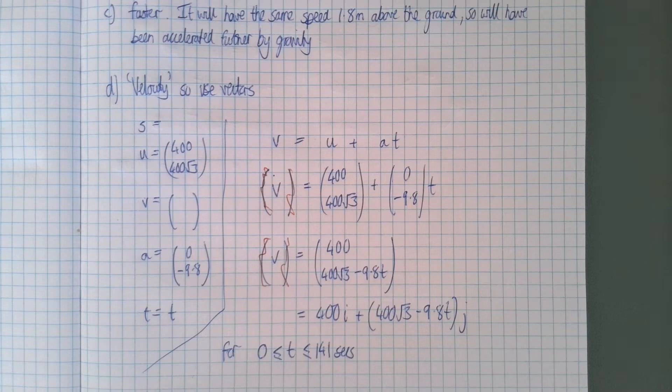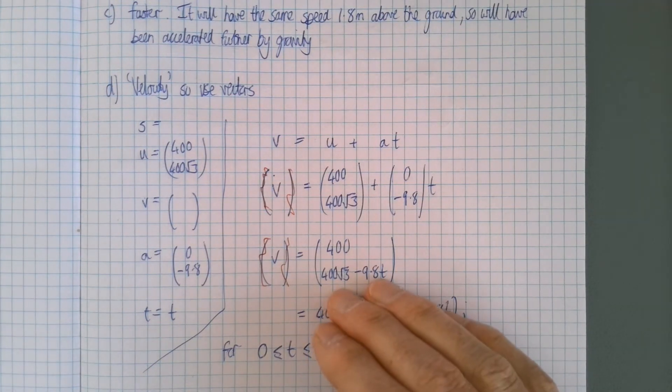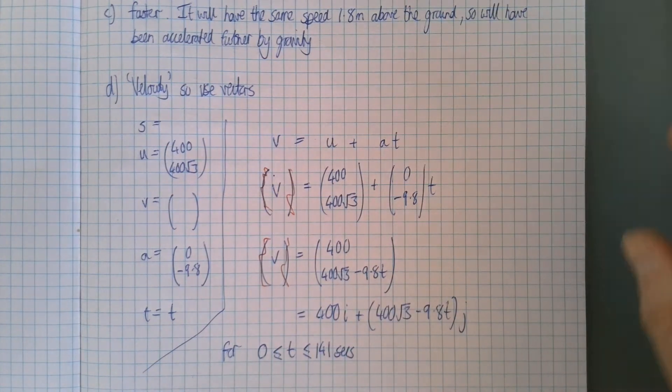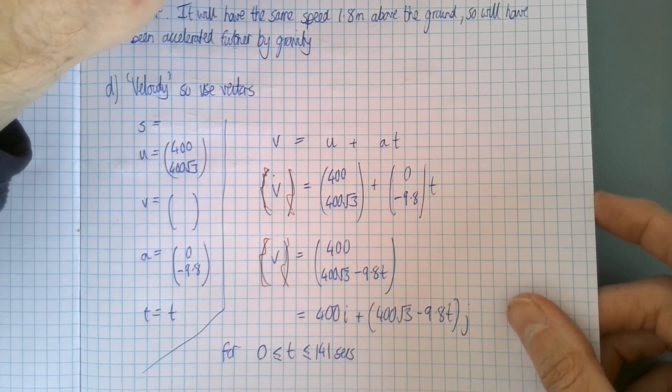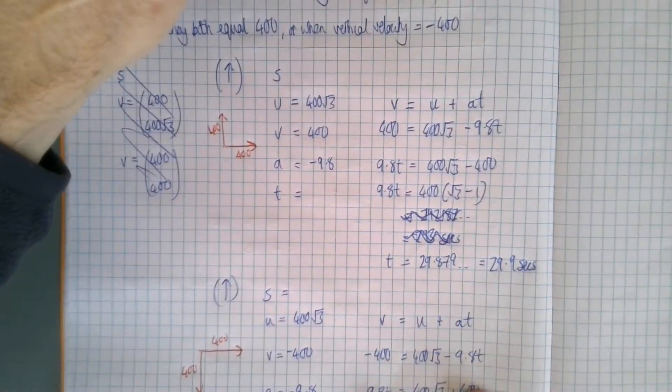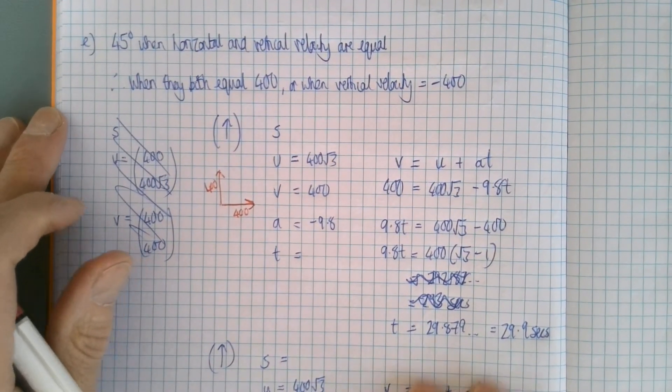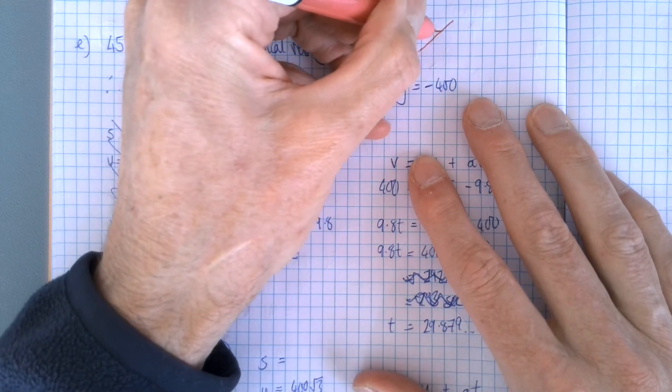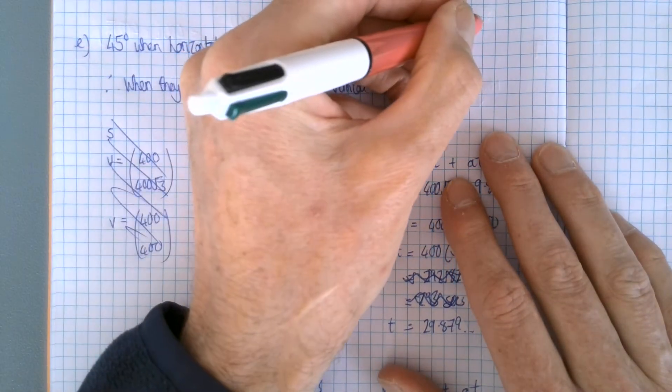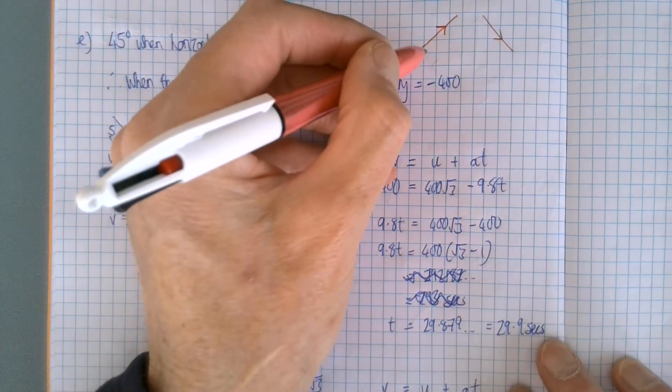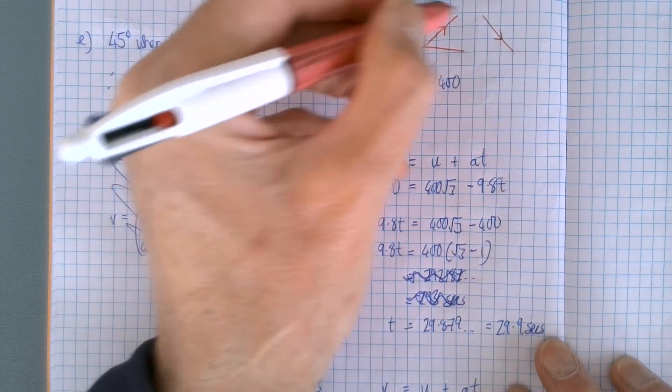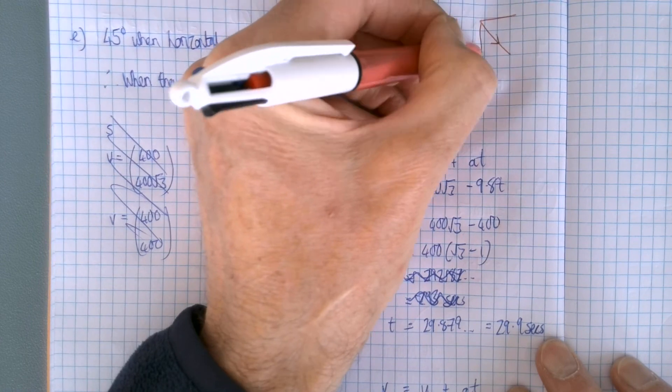And then the last bit was a bit of a subtle question. It said when is it traveling at 45 degrees, and I don't know if you spotted the subtlety there. So it's either going to be traveling at that direction on its way up or that direction on its way down. And what 45 degrees means is the horizontal and vertical components of the speed at that point, their magnitude will be the same.